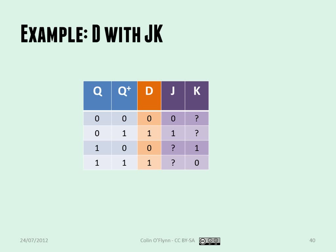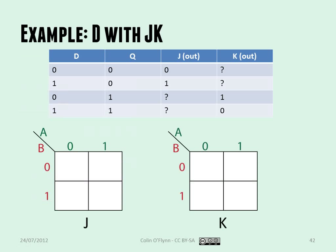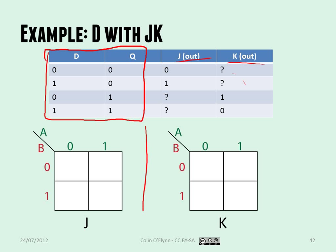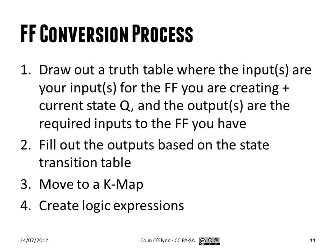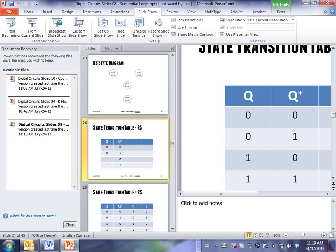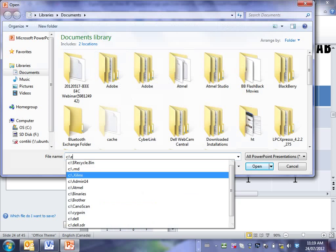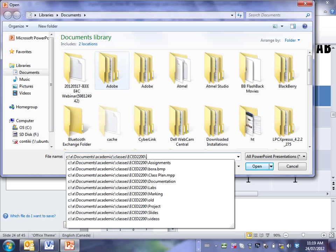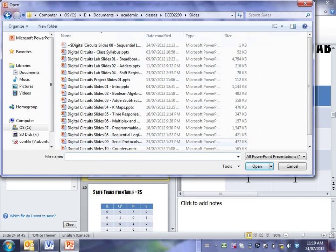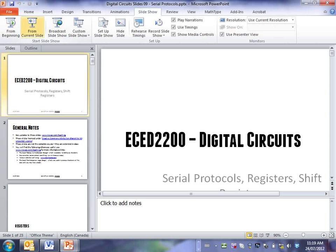You can do the same thing if you have a JK flip-flop and you want to create a D — the same procedure. In this case there are only two inputs, since we just have a D from the user and Q, the current state, and two intermediate outputs, J and K. So this means we have two K-maps to create. Here's the second thing we talked about — serial protocols and shift registers.